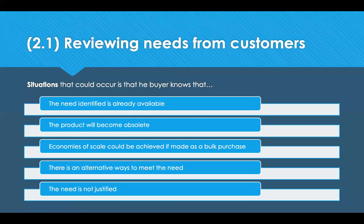Situations that could occur include: the buyer knows the need is already available somewhere else in the business; the product is obsolete with no future use; or you may be able to get economies of scale by combining that requirement with an order from another department to get a bulk purchase discount. If you're aware the need could be met in an alternative way — like LED bulbs instead of ordinary light bulbs — or it may simply be that the need isn't justified and isn't viable or reasonable.